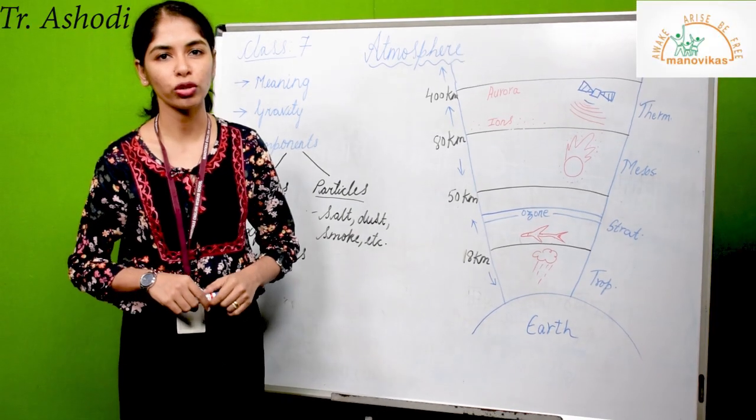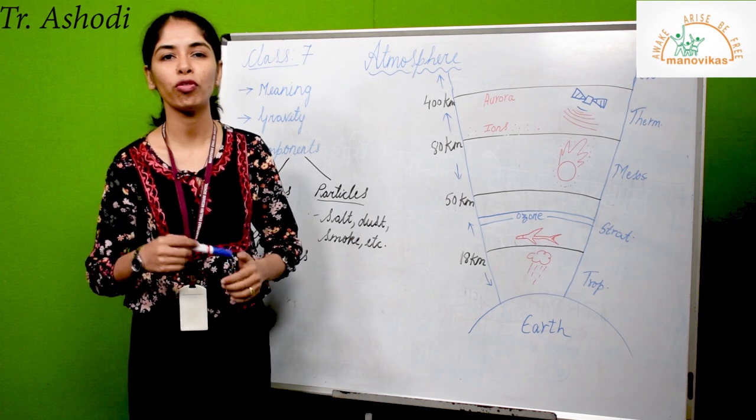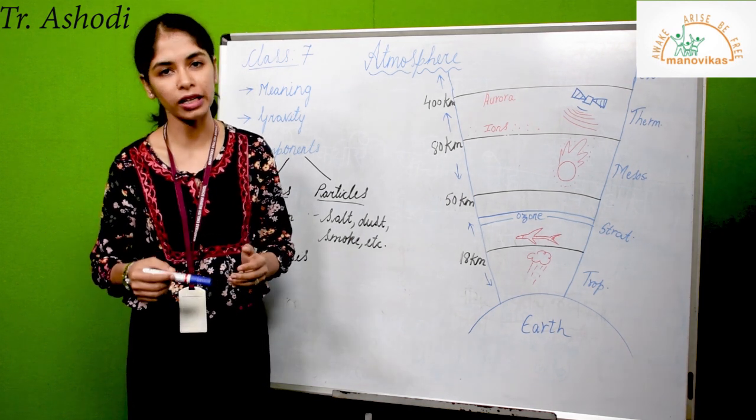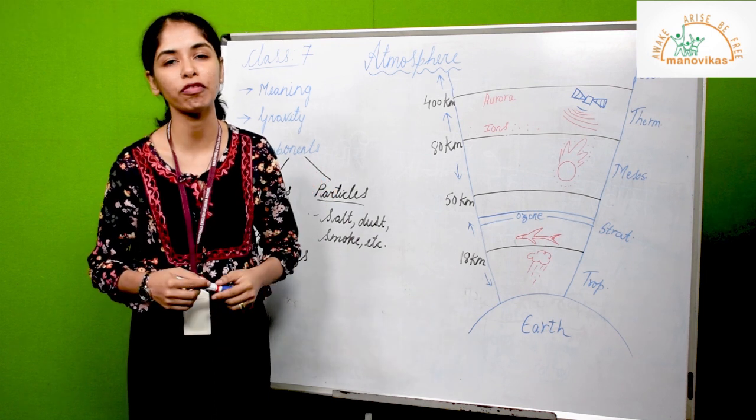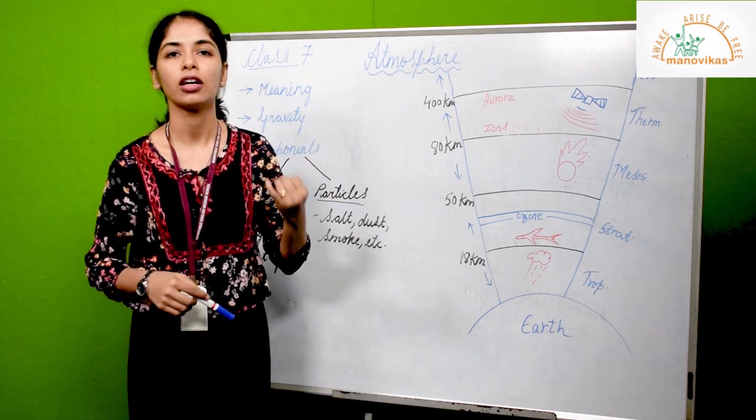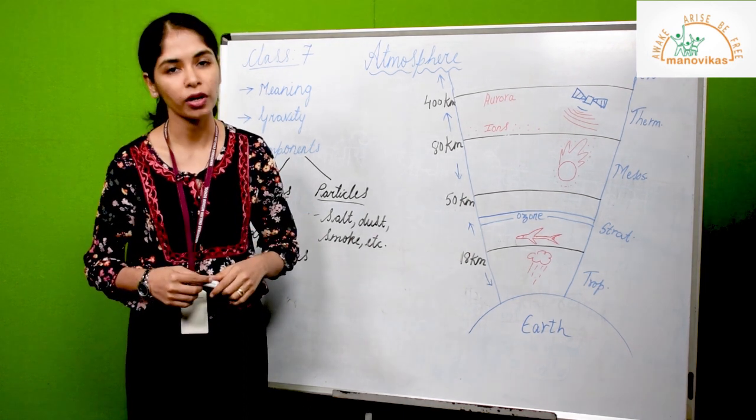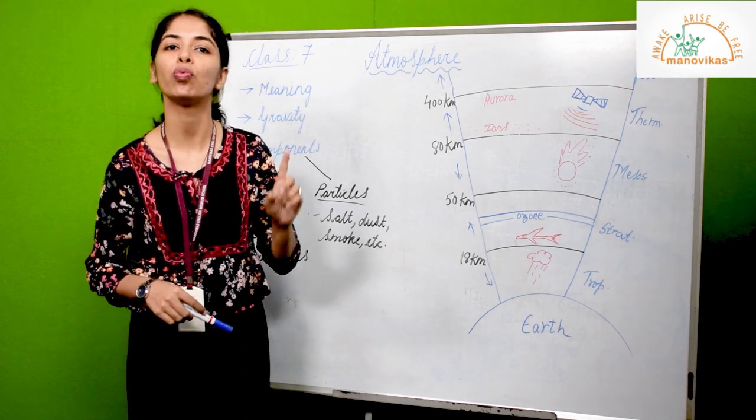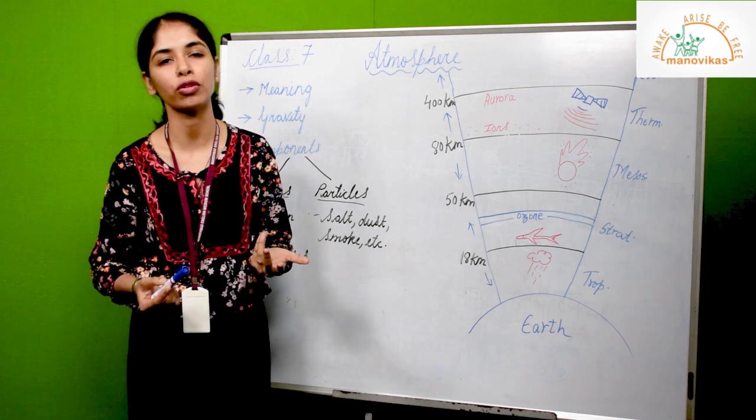Hi, in today's video we will be learning about the Earth's atmosphere. Before we learn about the atmosphere in detail, we know that there are five major elements that make life possible: space, earth, fire, water, and air. But we shall be learning only one of these elements, that is air.